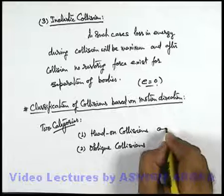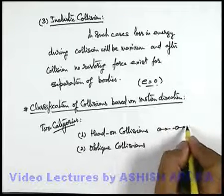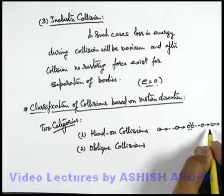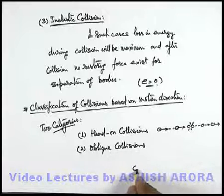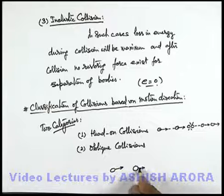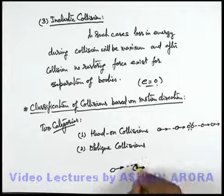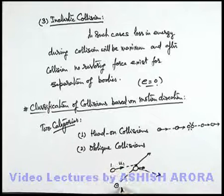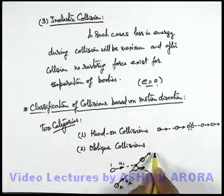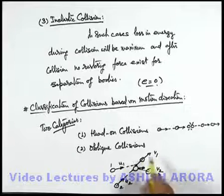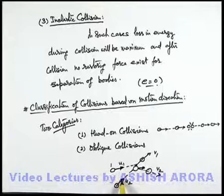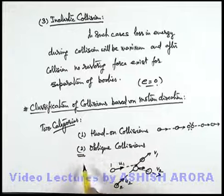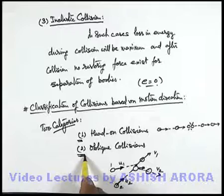Head-on collisions are also generally termed as one-dimensional collisions, and oblique collisions are two-dimensional or three-dimensional collisions. In head-on collisions, bodies move before collision along the same line, so after collision they also move along the same line. Oblique collisions are cases when bodies are moving with some offset in their velocity directions. If one body is moving with speed u1 and the second with speed u2, after collision the first body goes with speed v1 and the second with speed v2 in different directions. Such collisions are termed as oblique collisions. We will study head-on and oblique collisions in detail from the next article.